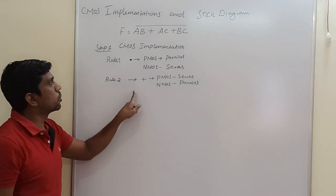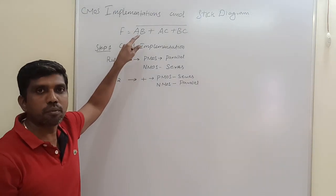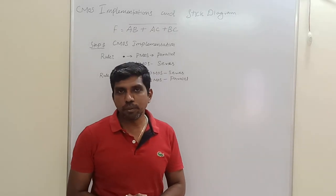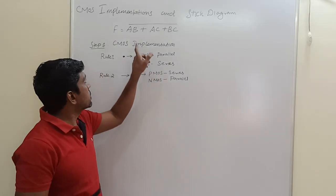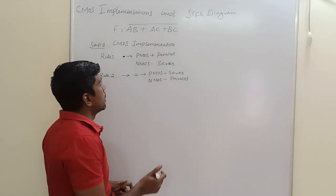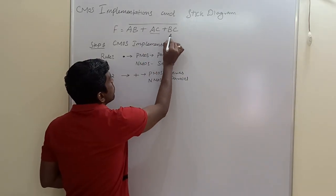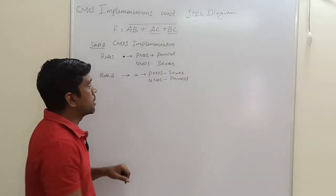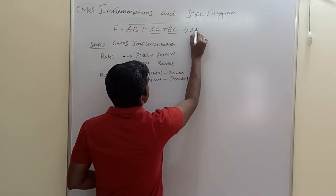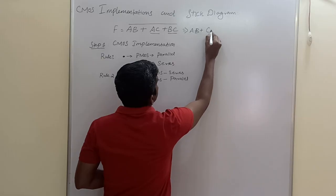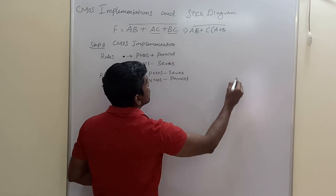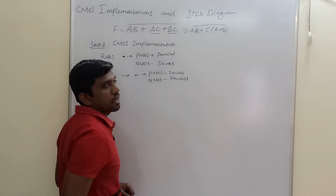Using these two rules, this Boolean expression is converted into the CMOS implementation circuit. Before going to implement the Boolean expression, first check if there is any possibility to simplify it. Here, in these two product terms, C is the common factor — take it out. So the simplified Boolean expression becomes AB plus C times (A plus B), the whole part.